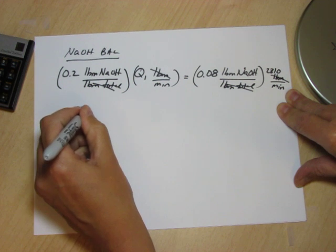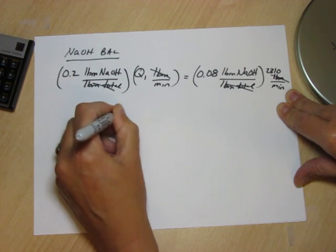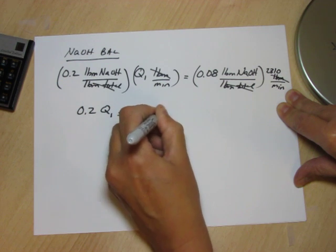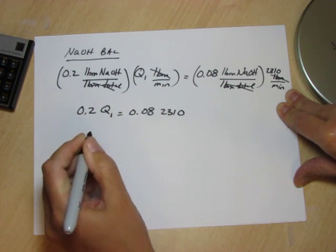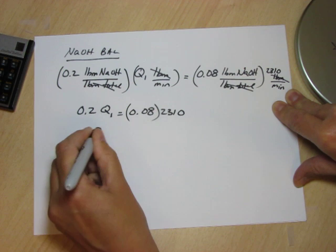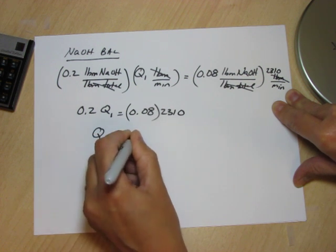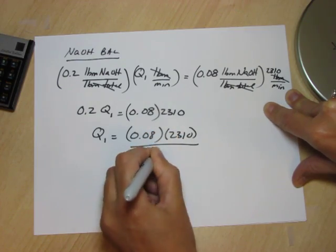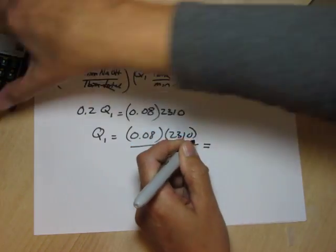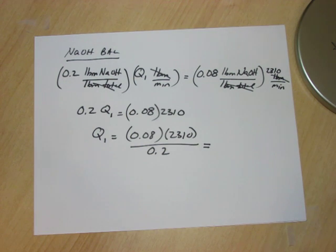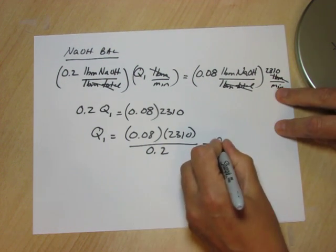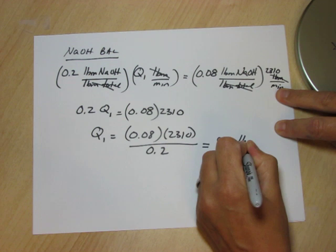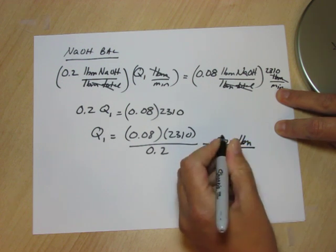So now we finish. 0.2 Q1 equals 0.08 times 2310. And so Q1 is equal to 0.08 times 2310 divided by 0.2. Using our calculator we can figure that out: 0.08 times 2310 divided by 0.2 is 924 lb/min.